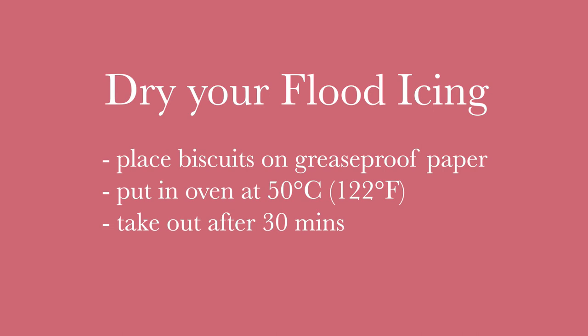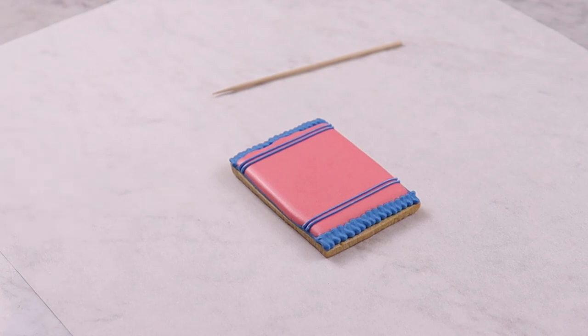After flood icing has been applied we always put the biscuit into an oven at a low temperature around 50 degrees Celsius for up to 30 minutes. This allows the flood icing to dry out so that the line icing and decorations can be added on top.